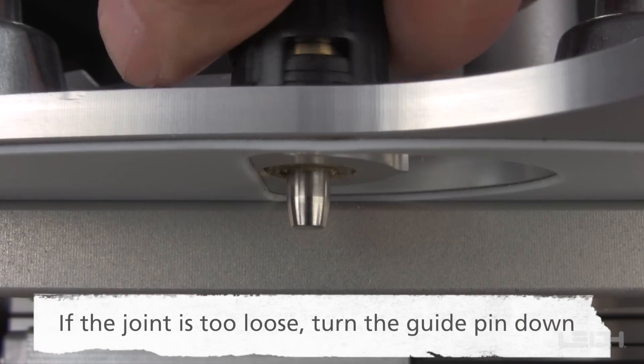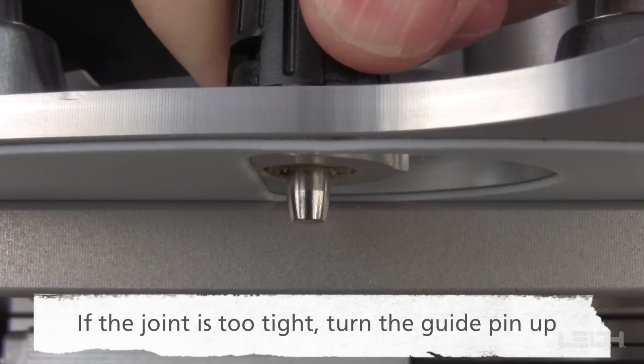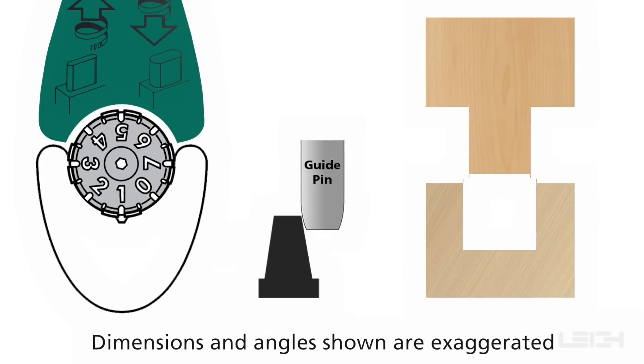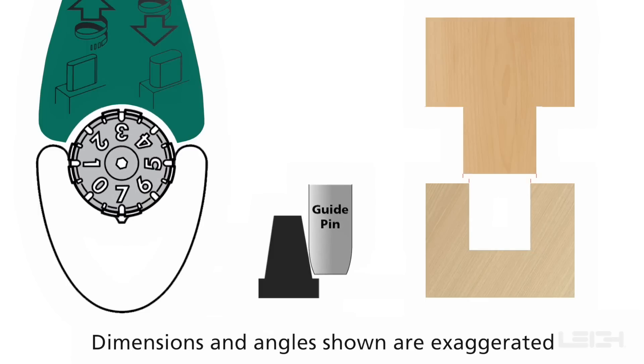If the joint is too loose, turn the guide pin down. And if the joint is too tight, turn the guide pin up. Raising the tapered guide pin produces a wider mortise and a smaller tenon for a looser fit. Lowering the pin produces a narrower mortise and a wider tenon for a tighter fit.